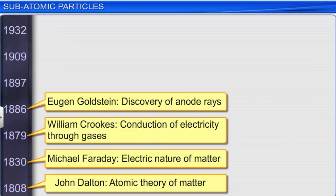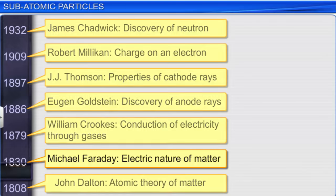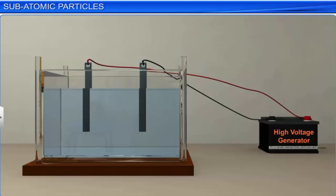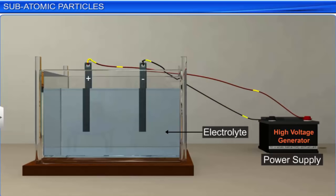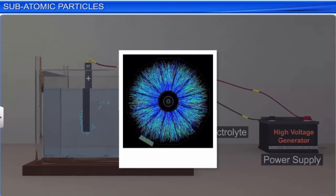However, Dalton's atomic theory could not explain the results of many experiments conducted by scientists in the later part of the 19th century and 20th century. For example, it could not explain the electric nature of matter as explained by Michael Faraday through his experiment in 1830. Faraday found that when electricity is passed through an electrolyte, which is a solution that conducts electricity, chemical reactions resulting in the deposition of matter at the electrodes take place. This experiment proved that electricity consists of charged particles, which indicated the electric nature of matter.